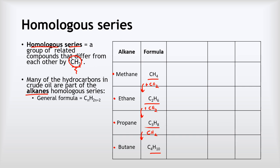The alkanes have the general formula CnH2n+2. What does that mean? The n is the number of carbons. So for methane, n equals one, and the number of hydrogens will be two times one plus two, which equals four. Let's try that for butane: in butane the number of carbons is four, so n equals four. The number of hydrogens is two times four plus two, which equals 10. So that's what we mean by that general formula CnH2n+2.